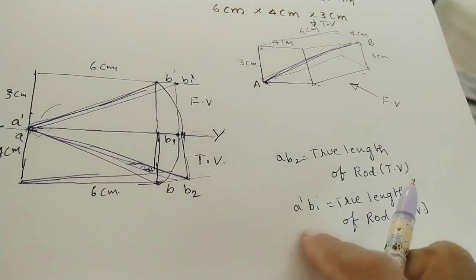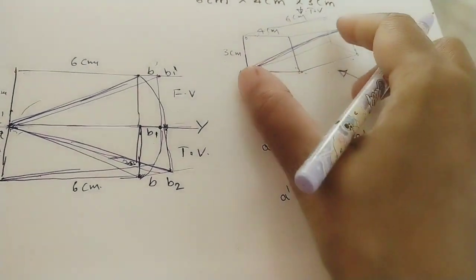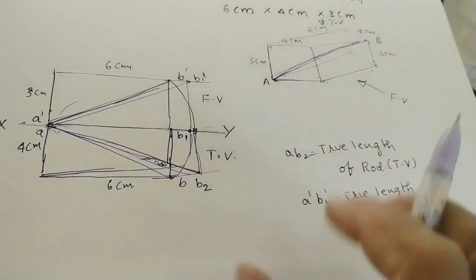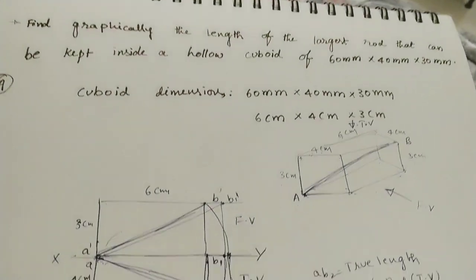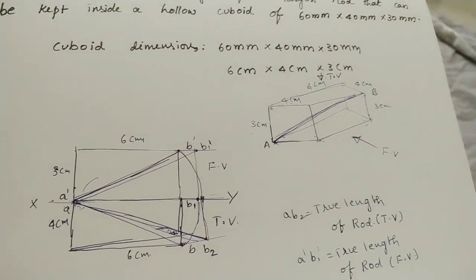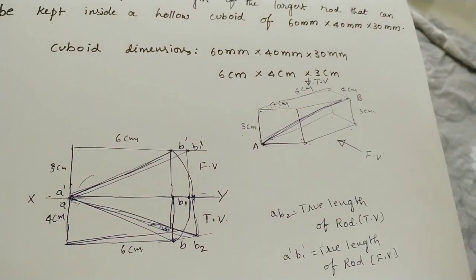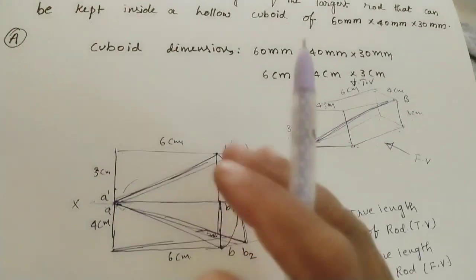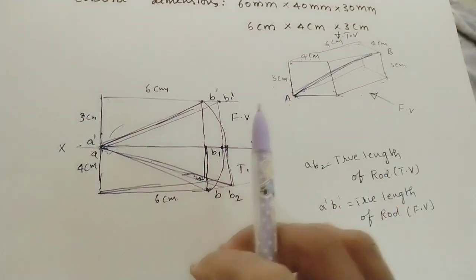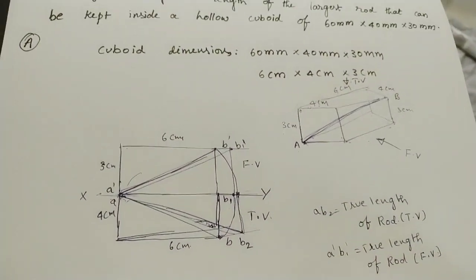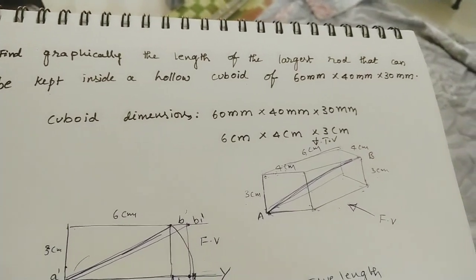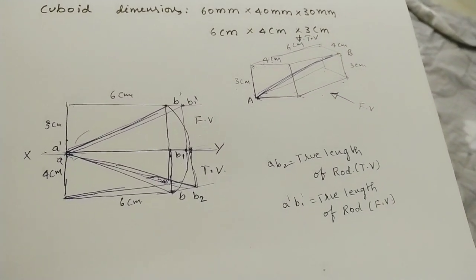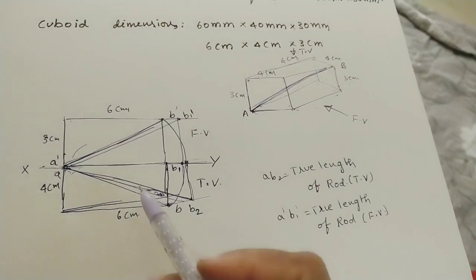These two lengths should be the same because we are using the same rod, so this rod length should match. This is the procedure for finding the true length — the maximum length of the rod. We will do this diagram graphically in the next class. This is the procedure with the rough diagram.